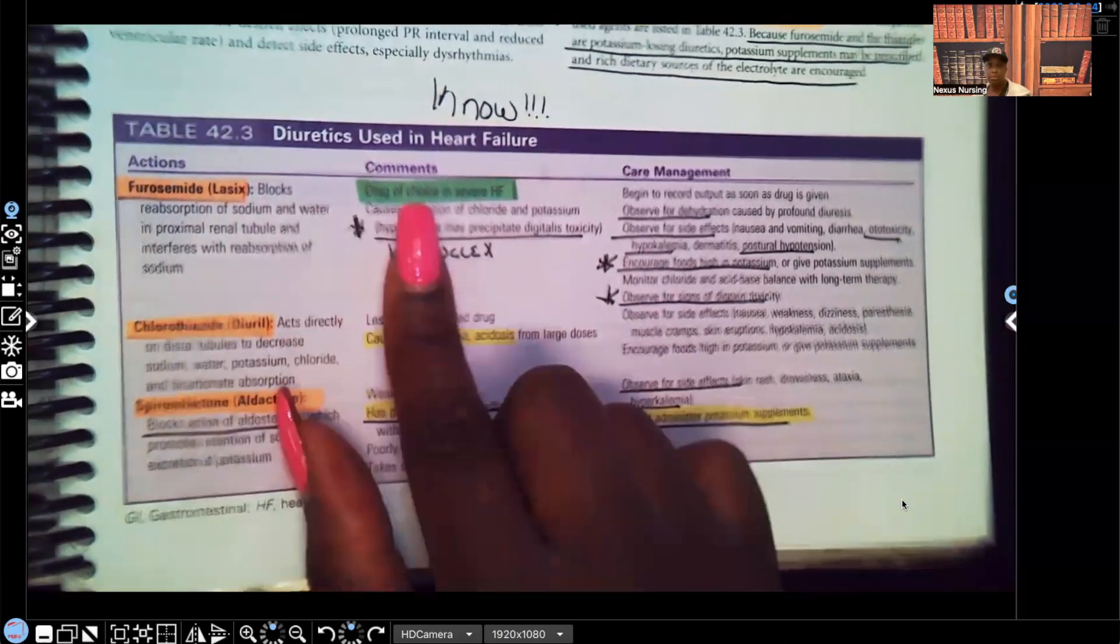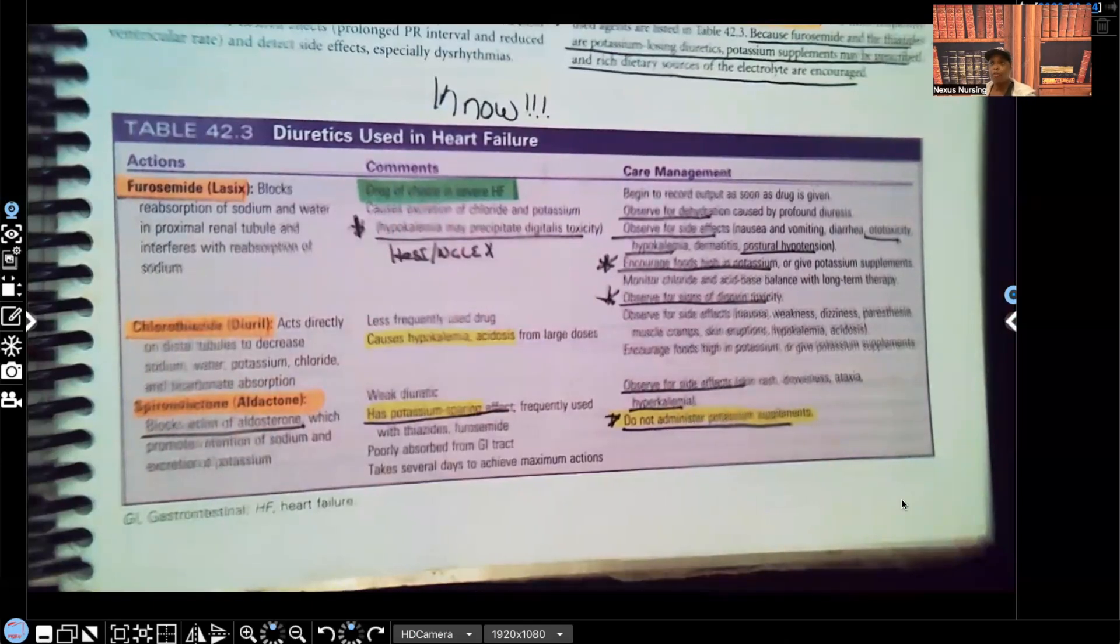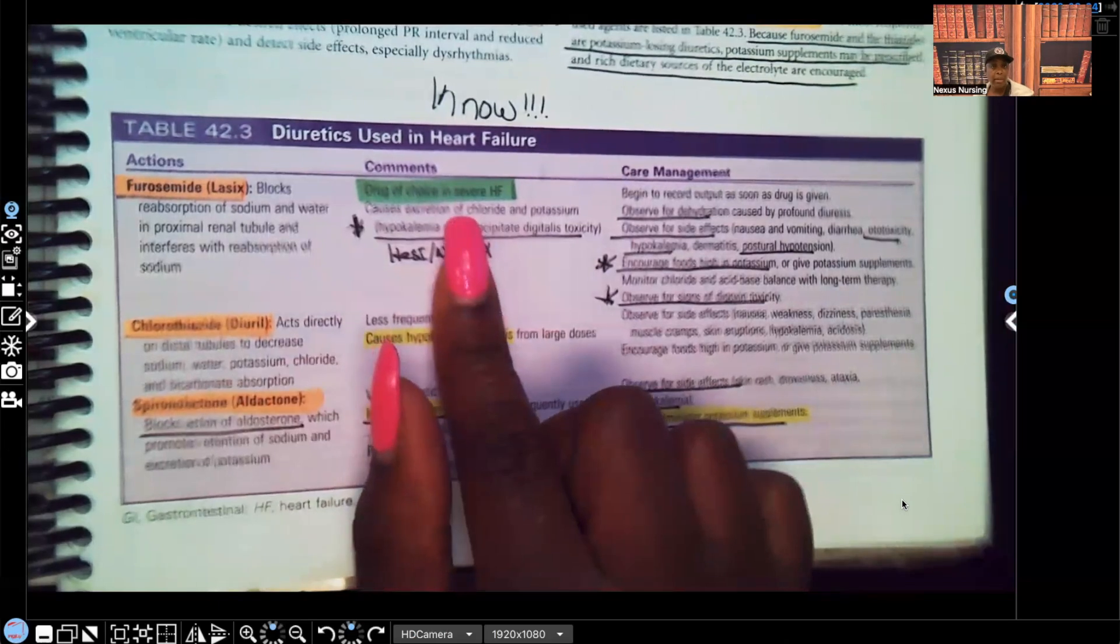Look, it says Lasix furosemide blocks the reabsorption of sodium and water in the proximal renal tubule and interferes with reabsorption of sodium. Remember guys, sodium and potassium have an inverse relationship. So when you see that sodium down, you expect to see the potassium up and vice versa. Look at the comments: drug of choice.